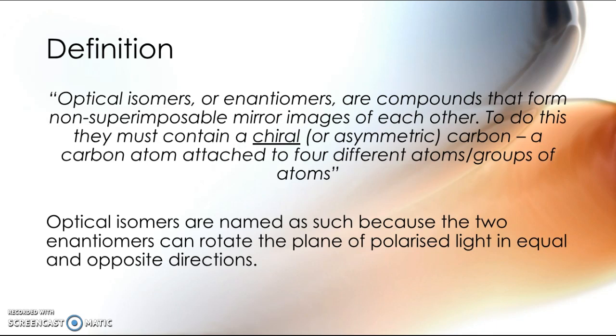Optical isomers, otherwise known as enantiomers, are compounds that form non-superimposable mirror images of each other. So that's like your left and your right hand. If you look at them, they look pretty much the same, but they're actually just mirror images of each other. They're non-superimposable, they're not the same.